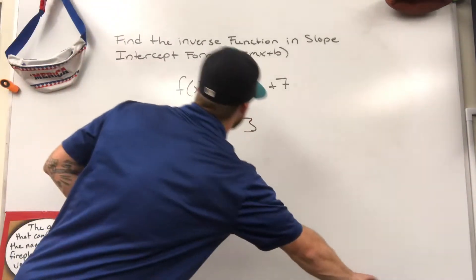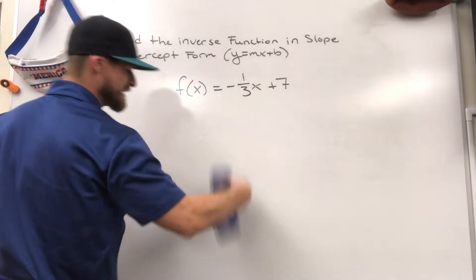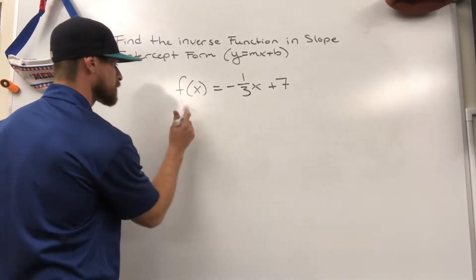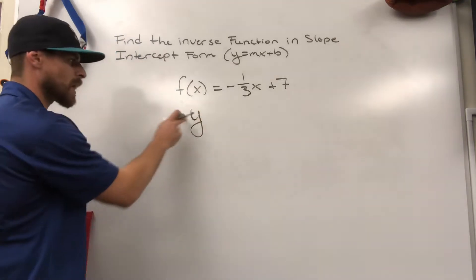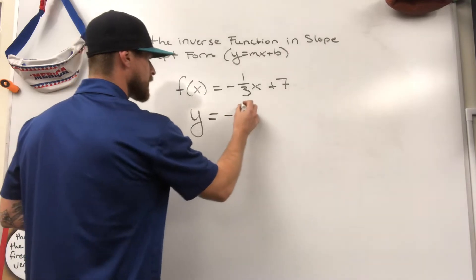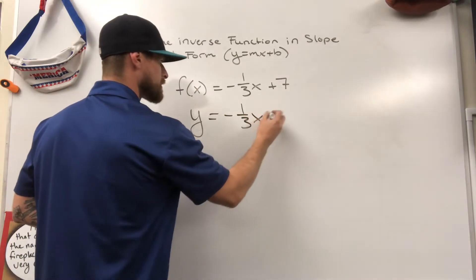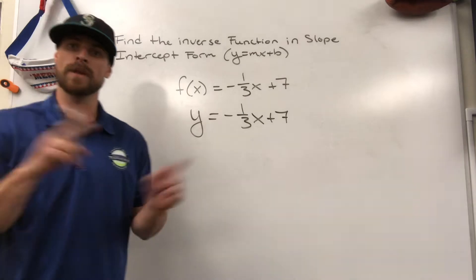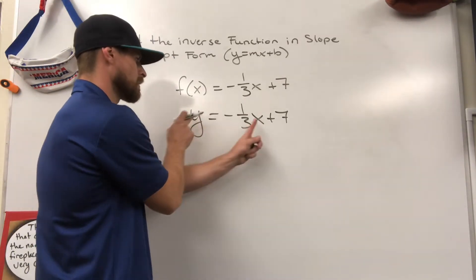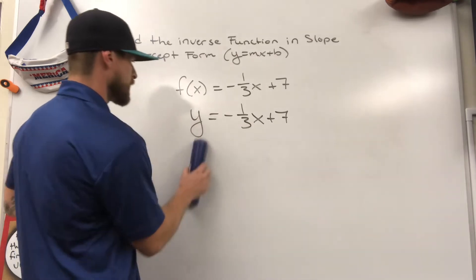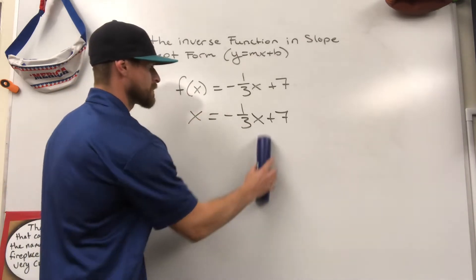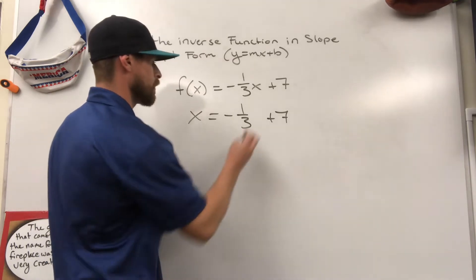So to find the inverse of this function, because we're trying to flip the x and the y, that's exactly what we're going to do. We're going to take f of x and we're going to just turn that into a y, because y is so much easier to work with when we're dealing with algebra. y equals negative one-third x plus seven, but remember we're trying to flip our x and our y, so that's exactly what we're going to do. We're literally just going to change those. So I'm going to erase my y and turn it into an x, and I'm going to erase my x and turn it into a y.